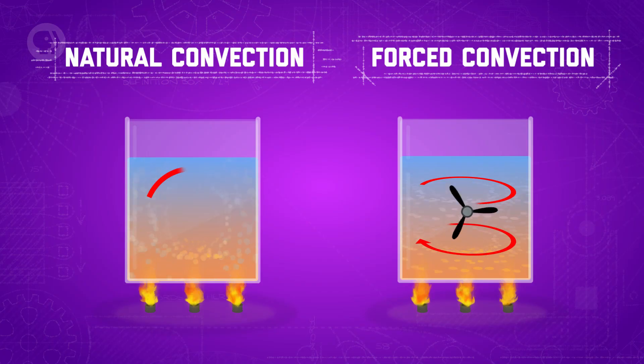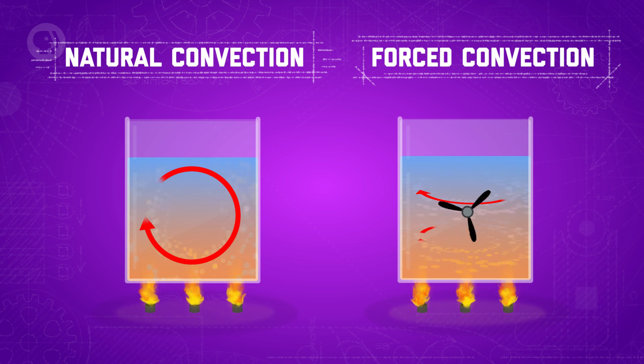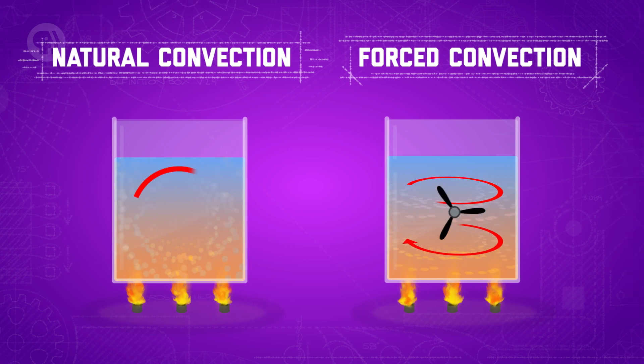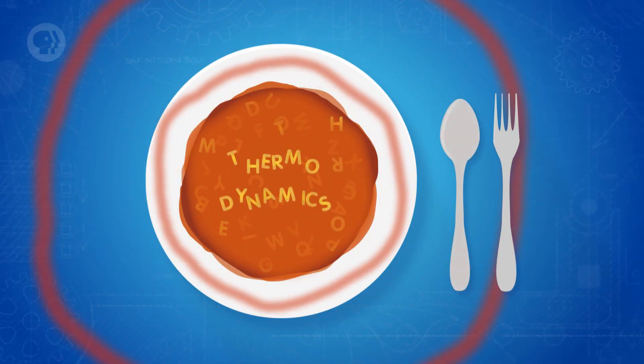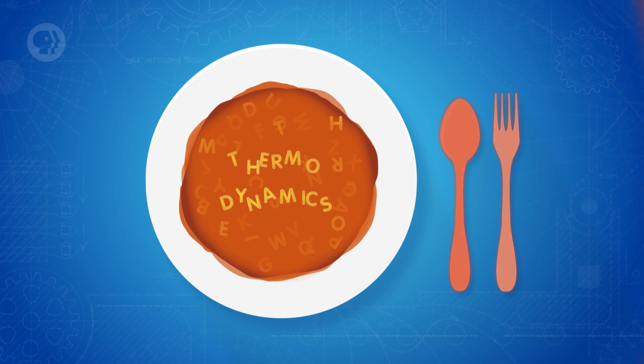We've talked a good deal about transfer so far. Whether it's momentum transfer, as we saw with moving fluids, or heat transfer, like stepping out in the sun or touching a hot pan, we've seen how things move and change. But when people think of mass transfer, they often think of something pretty simple — the movement of an object or fluid's mass from one place to another. But that's not really what it is. That's more like bulk fluid movement, which we learned about in fluid mechanics.